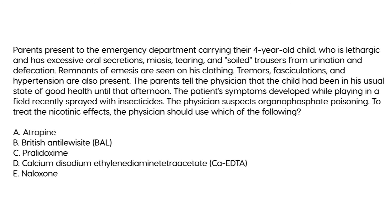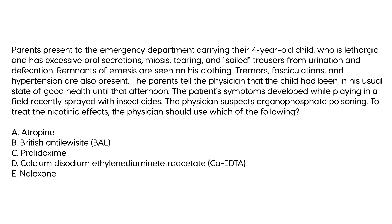A 4-year-old child presents lethargic with excessive oral secretions, miosis, tearing, urinary and fecal soiling, emesis on clothing, tremors, fasciculations, and hypertension. The child was playing in a field recently sprayed with insecticides. The physician suspects organophosphate poisoning and asks which drug treats the nicotinic effects. Since nicotinic symptoms are involved, the answer is pralidoxime (2-PAM).